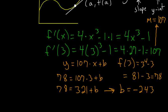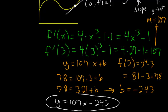So in the end the equation of the tangent line of the function at the x value of 3 is y = 107x - 243 and this is the final answer.